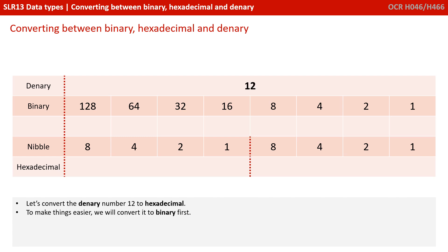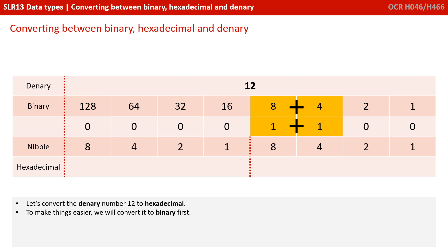Let's have a look at converting the denary number 12 into hexadecimal. What you want to do is go through binary first — it just makes things a lot easier. So we take the number 12 and write it out in binary, as shown in a previous video. There's the number 12 in binary: 0000, with an 8 plus a 4 — 8 plus 4 is 12 — and then 0 and 0 at the end.